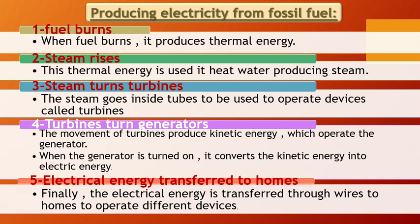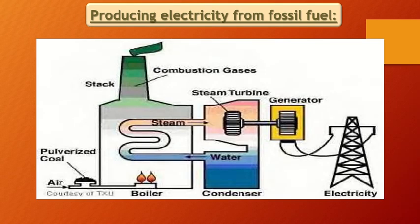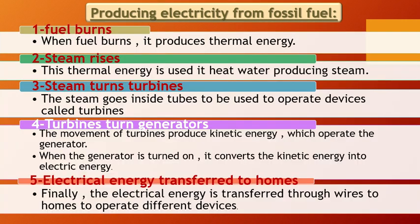We have a turbine inside the electric power station. This turbine moves by the action of the steam or water vapor. The turbine is connected to a generator. When the turbine moves, the generator also moves, and the generator converts kinetic energy into electrical energy.